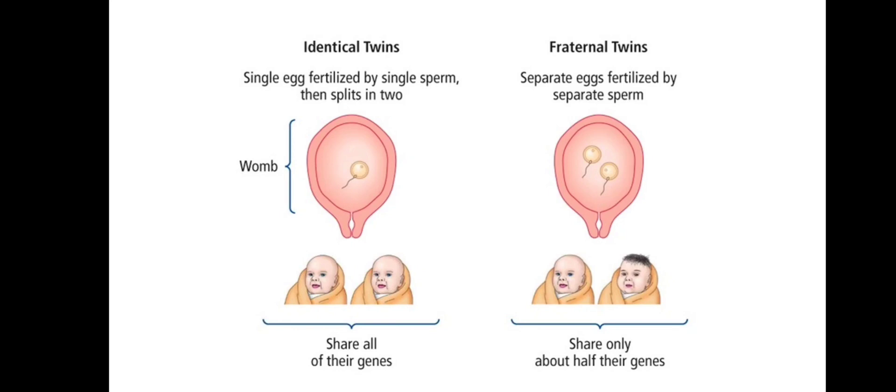If you look at a picture of identical twins versus fraternal twins: identical twins are fertilized from a single sperm and a single egg. They develop into two babies and are genetically identical — they share all their genes.